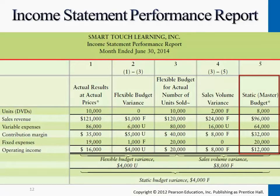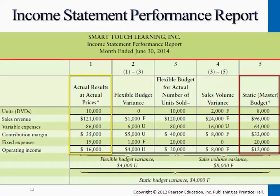At the end of the entire month, we realize these are our actual results. We sold 10,000 units. Apparently, not each and every one of them sold at $12, because if it were, we would only have $120,000 - but we got $121,000. Variable expenses are $86,000 - apparently not $8 per unit, otherwise we'd have $80,000. Contribution margin is $35,000. Fixed expense is $19,000, which again is different from what we expected.